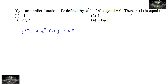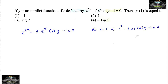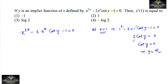At x equal to 1: 1 to the power of 2 minus 2 into 1 to the power of 1 into cot y minus 1 equals to 0, which gives 2 times cot y equal to 0, so cot y equals 0, which implies y equals pi by 2.